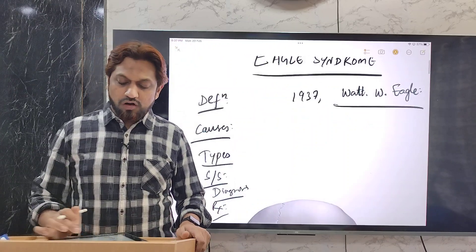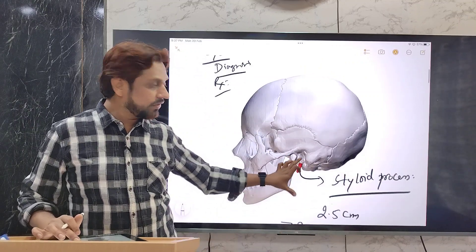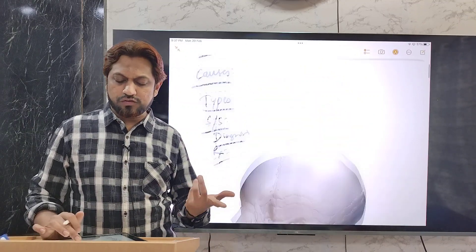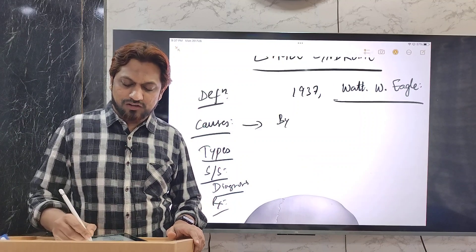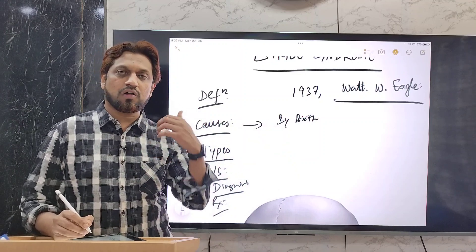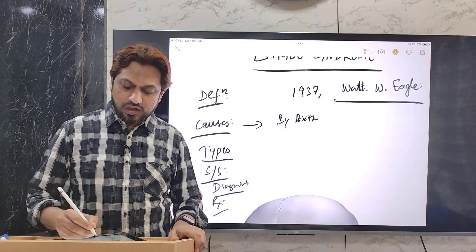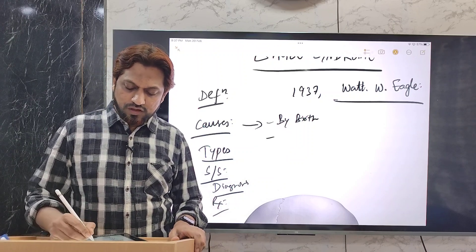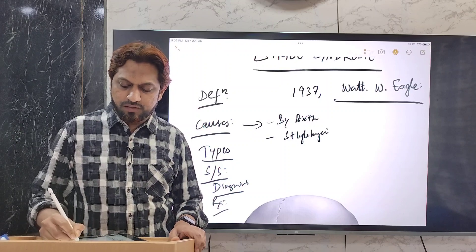What are the causes of this? Why actually there should be an enlargement of this styloid process? Actually, cause is not known, but probably it could be due to by birth, congenital malformations, the size is elongated and as one advances, this will get enlarged.